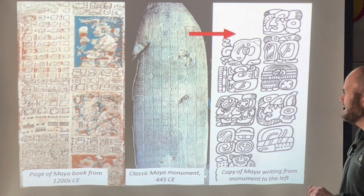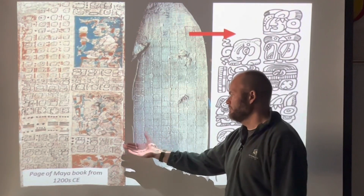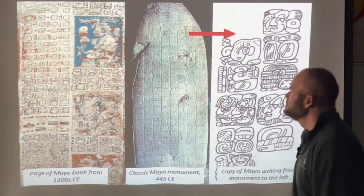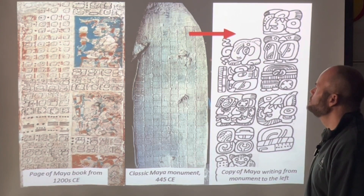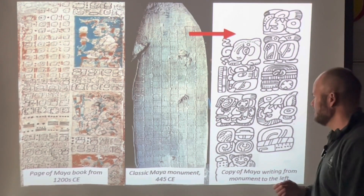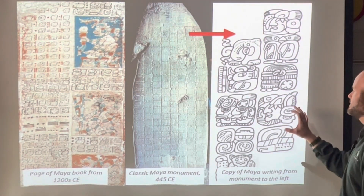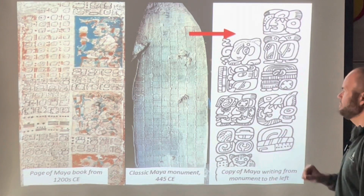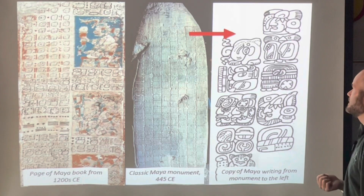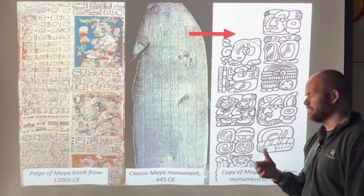Looking at the Mayan writing, this is a page from a Mayan book from the 1200s. Studying the Mayan writing, we don't really have much writing from Teotihuacan, but you can compare some of the characters used in Mayan writing to things depicted in the art and try to get a sense of how likely it is that there might have been influence.